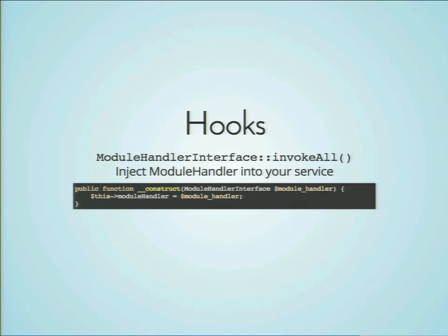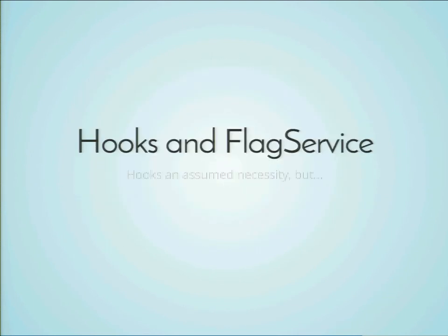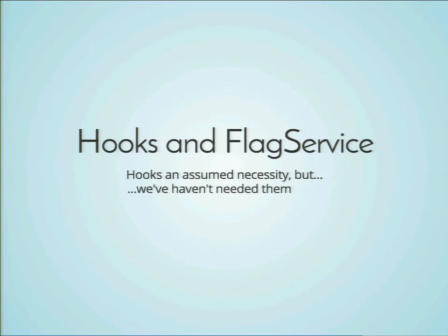There are only three events so far — actually working to get a fourth in. Just flagged, unflagged, flag deleted, and flag reset. Hooks still exist in Drupal 8 — there's a class called the ModuleHandlerInterface with a method called invokeAll, which is where module_invoke_all went in Drupal 8. You want to inject that module handler into your service. In flag service, we assumed hooks would be necessary, and yet we haven't needed them — there are so many different ways to do things. We might still use hooks in the future; there's still a debate about that.